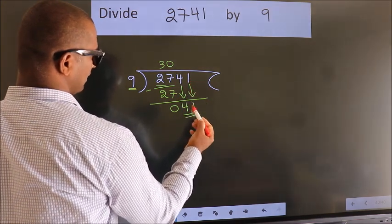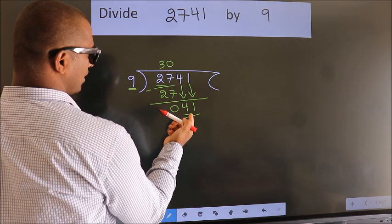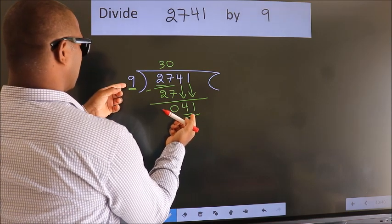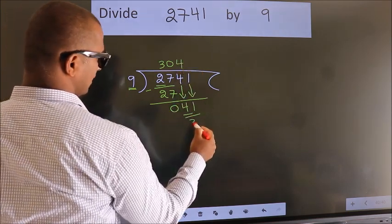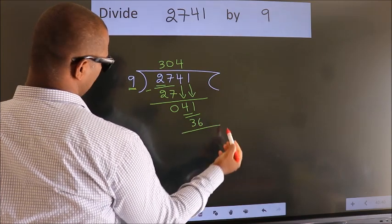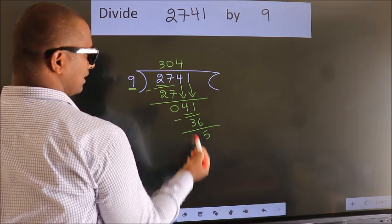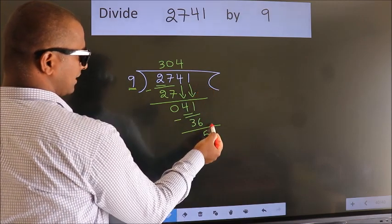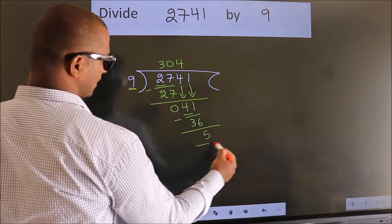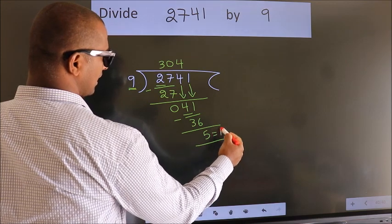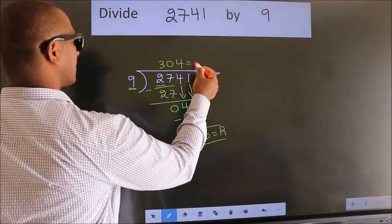So, 41. A number close to 41 in the 9 table is 9 fours, 36. Now, we subtract. We get 5. No more numbers to bring down. So, we stop here. This is our remainder. This is our quotient.